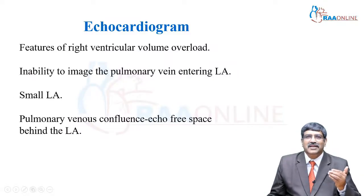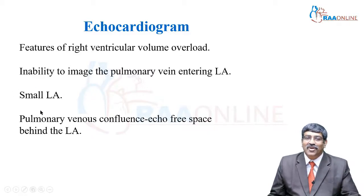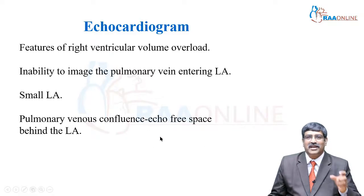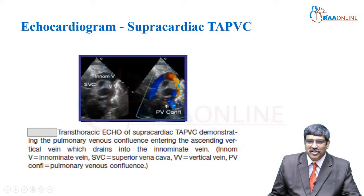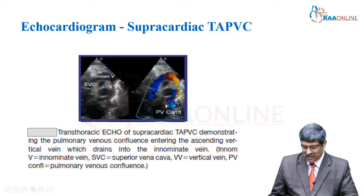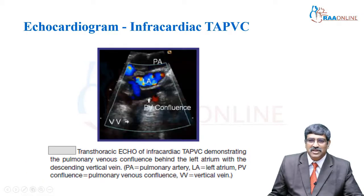How do we diagnose TAPVC on echocardiogram? First and foremost is right ventricular volume overload. The most important finding is the inability to find a pulmonary vein entering the left atrium, and the left atrium will be very small compared to the right atrium. There is an echo-free space behind the left atrium, which is the pulmonary vein confluence. In supracardiac TAPVC, the pulmonary vein confluence drains via the vertical vein into the innominate vein and then into the SVC. In the cardiac type, the pulmonary vein drains into a dilated coronary sinus with an ASD. In the infracardiac type, the pulmonary vein confluence goes via the vertical vein and drains into the IVC.